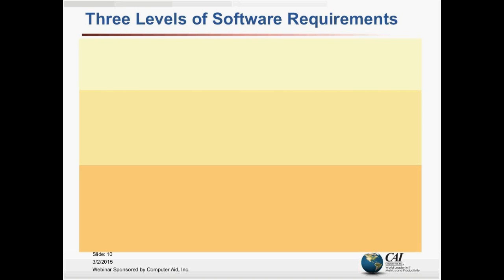I'm going to show you a three-level model that I have found very helpful for thinking about the different kinds of information that collectively represent the requirements for a project. I'm not saying this model is correct in an absolute sense, but it's something I've been using for a long time and I find it useful. There's a saying about models we should keep in mind: all models are wrong, some models are useful. This is clearly a simplification, but I find it helpful.